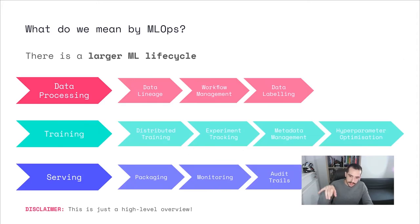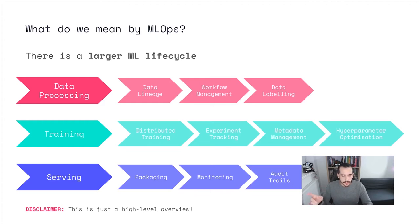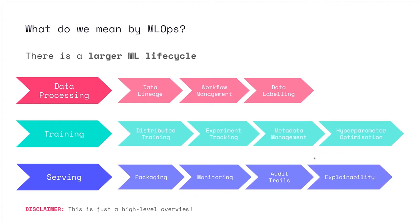You need to find a way to manage this process at wide scale. If you drill down into each of these steps, there are a lot of sub-steps involved. For example, in data processing you need to think about data lineage and workflow management. For training, you need to track your different experiment runs and their outputs. And for serving, you need to think about monitoring your model and how it's performing in production. MLOps essentially focuses on how to manage this larger machine learning lifecycle at production scale.